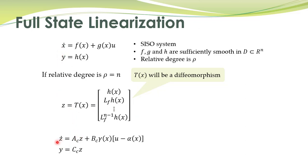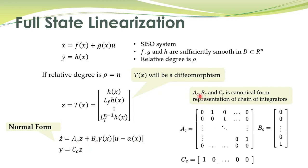So it has been demonstrated that this state transformation is a valid diffeomorphism. If we use this state transformation, the system will be converted into what we call normal form. Once we have normal form, we can obtain full state linearization of this system. The matrices Ac, Bc, Cc are given by these relations — this is the canonical form representation of a chain of integrators.